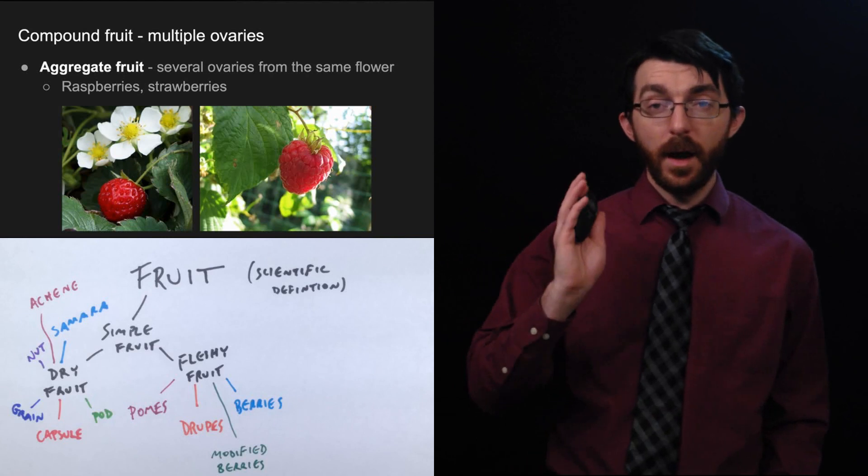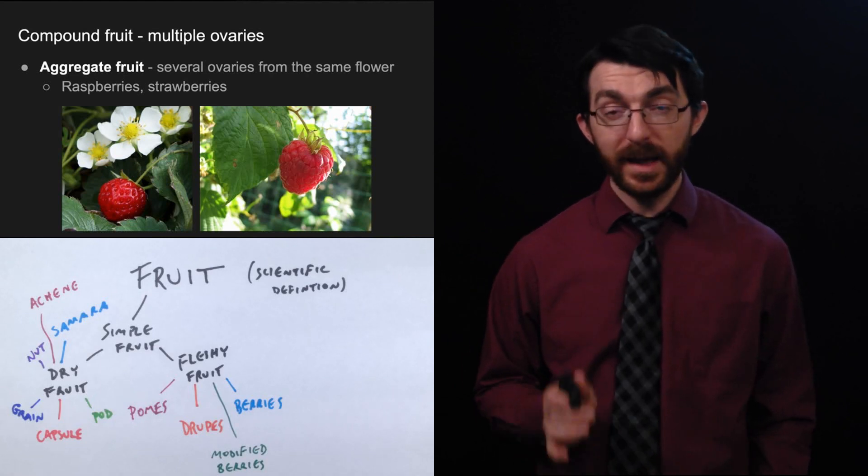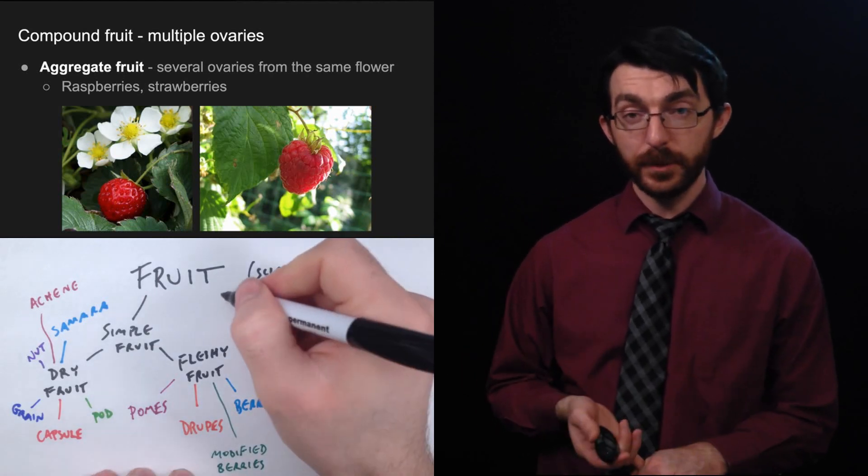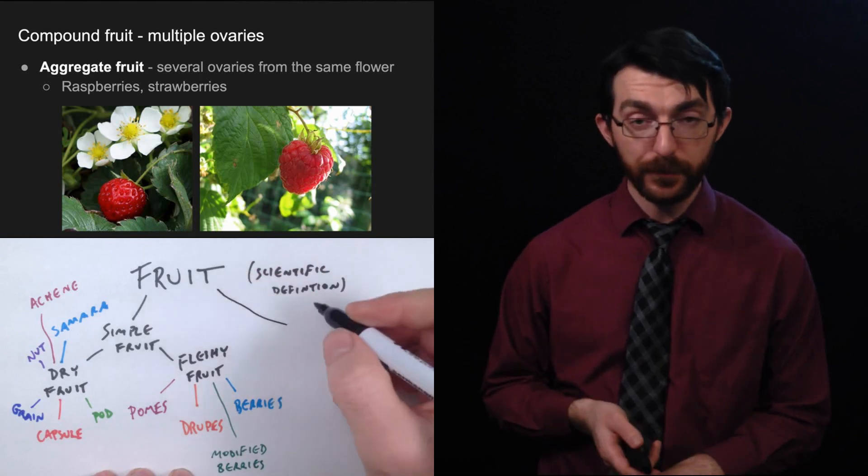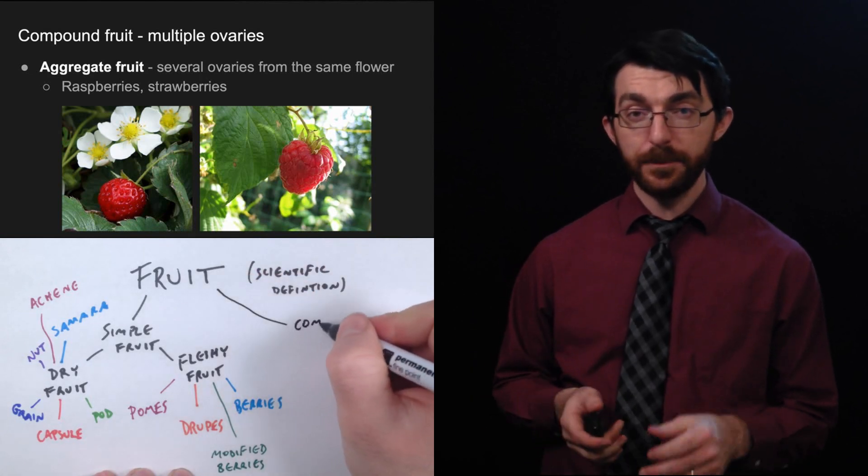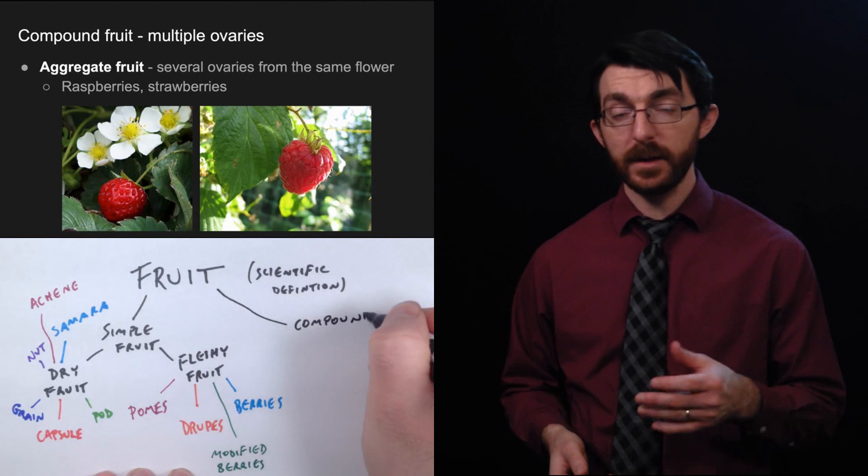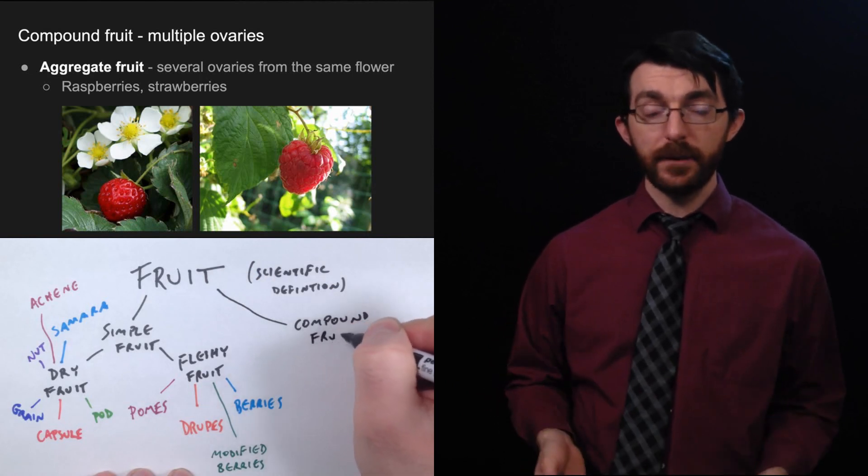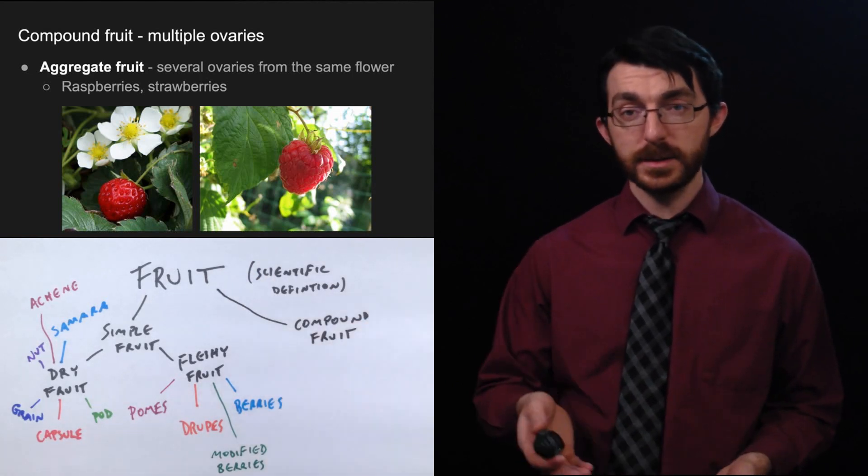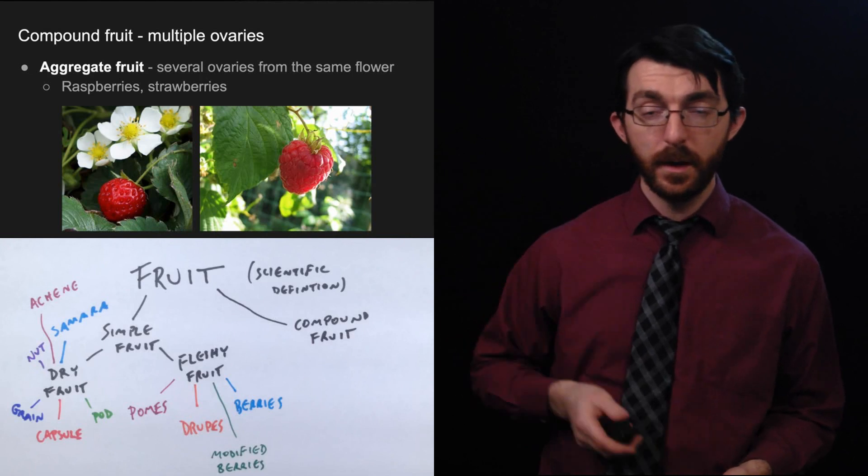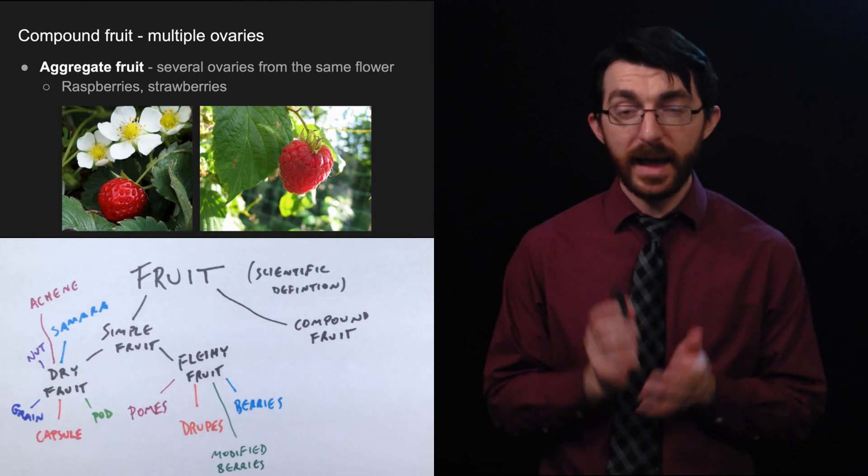Okay. So we've talked about simple fruit this whole time. That would be a single ovary. We had fleshy fruit. We had dry fruit under fleshy fruit. We had pomes. We had berries. We had modified berries under dry fruit. We had pods. We had nuts. We had achenes and samaras, lots and lots of categories.